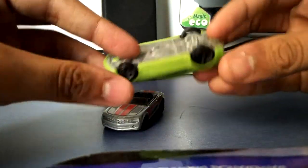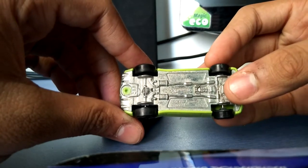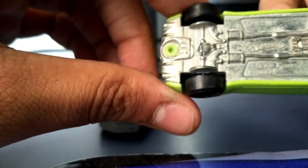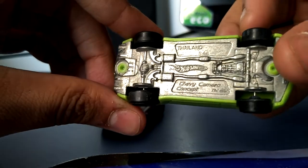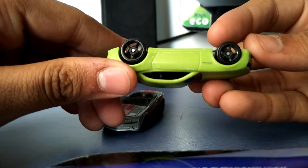If you see the back, this one is a Chevy Camaro concept. It's made in Thailand, it's Hot Wheels. If you see the tires...